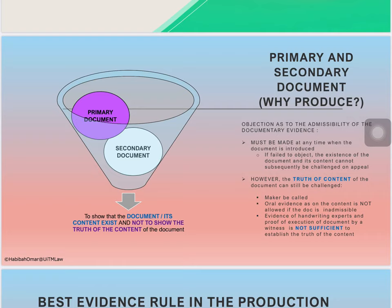Section 61 says that proof of content of documents — the contents of documents may be proved either by primary or by secondary evidence. Section 61 mentions primary and secondary evidence in the context of documentary evidence. Section 62, when you talk about primary evidence, means the document itself produced for the inspection of the court. So if you have an original document — basically a diary — you produce that diary in court. The tendering of the diary made by the victim is the tendering of primary evidence under Section 62.